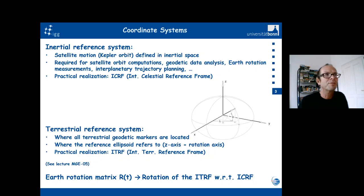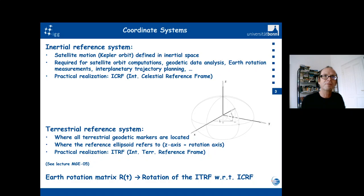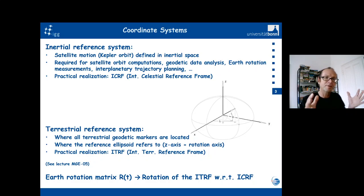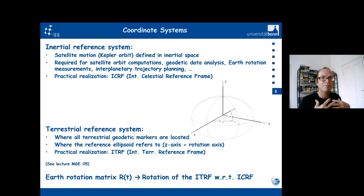The inertial system is required for precise computations like satellite orbit computations and geodetic data analysis. It's also required for Earth rotation measurements and for interplanetary trajectory planning. Practically, the inertial reference system is realized as the so-called International Celestial Reference Frame — a coordinate system realized through the positions of fixed stars, in fact the positions of radio stars, which we can measure with radio telescopes.